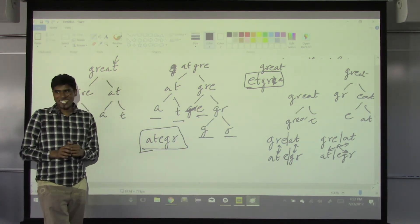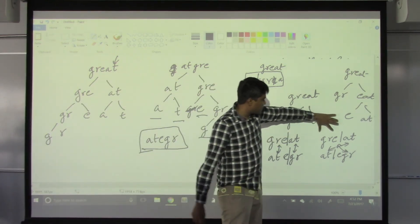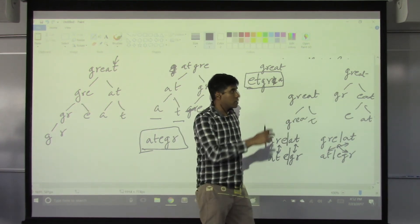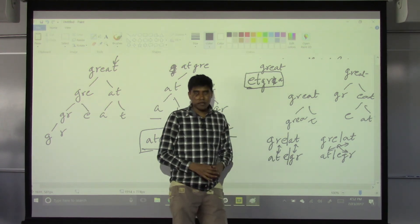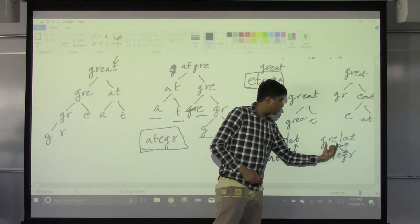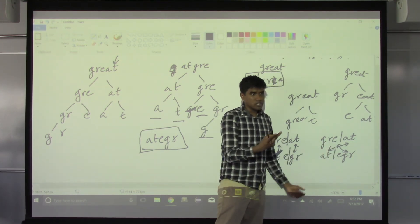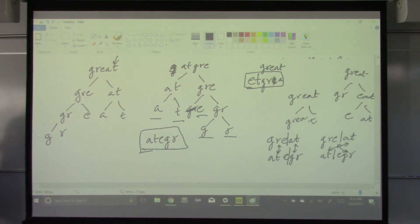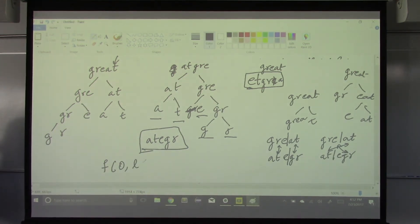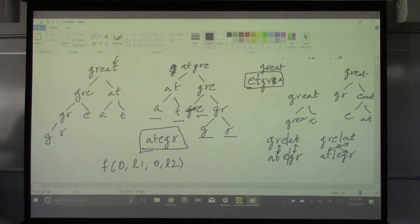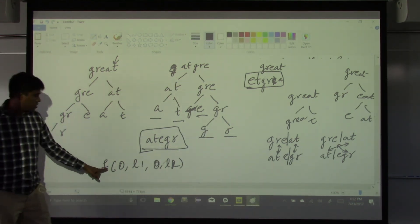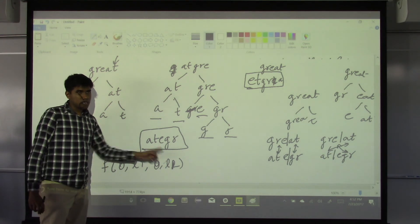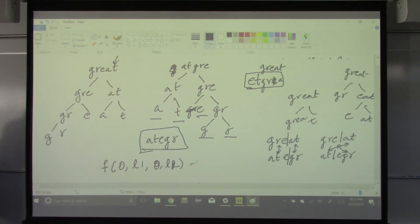What is a good data structure to tell me that? Basically I need to know: if I'm cutting here, I need to know f(0, l1, 0, l1). This function takes the first string from 0 to l1 and the second string from 0 to l1 and tells me whether the whole thing is a scramble. I have a loop where i goes from 0 to l1.